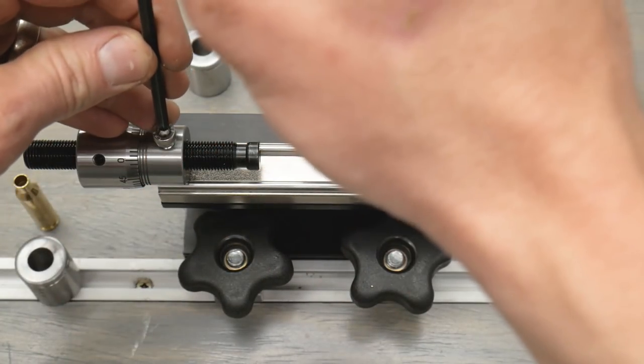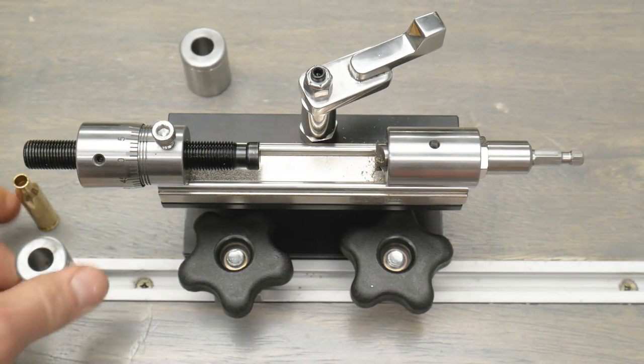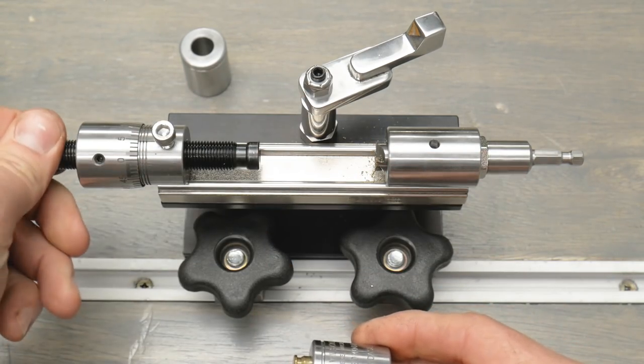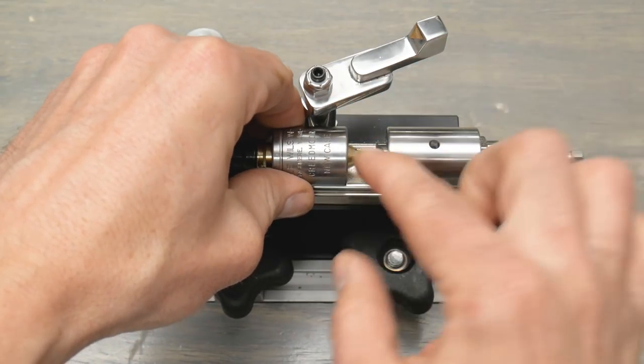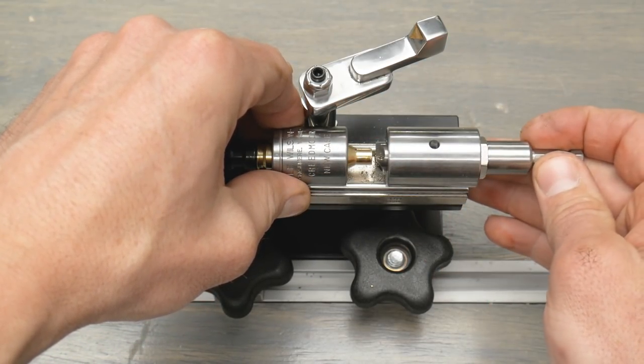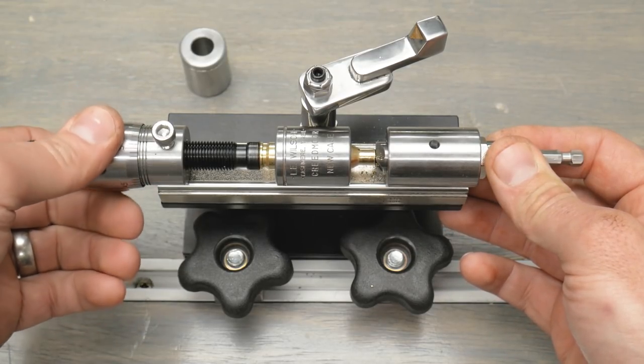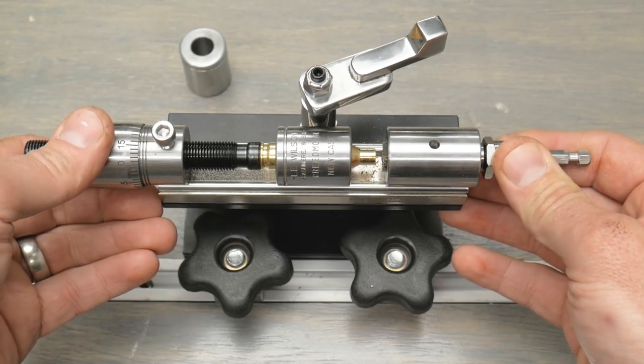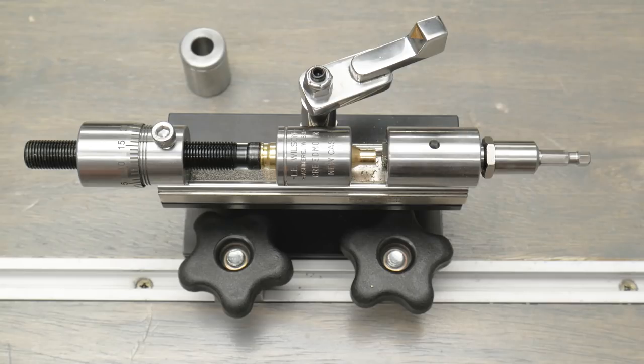To set this I'm just going to loosen my micrometer lock. We're going to put a case into the trimmer, back that out a little bit, and then we have a little bit of a gap here. Now we're going to run this up until I'm just shaving an ever so slight amount here. We're going to run it a few thousandths in and do a temporary lock on that.